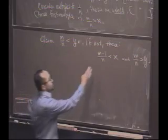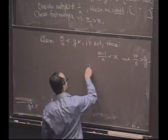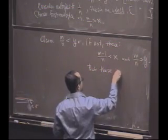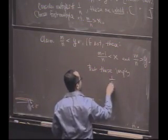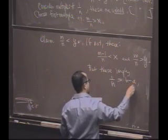But together, these statements would say that 1 over n, but these two statements imply that 1 over n is, in fact, bigger than y minus x, a contradiction.